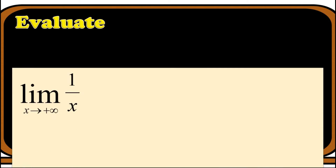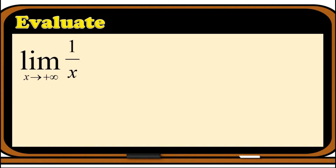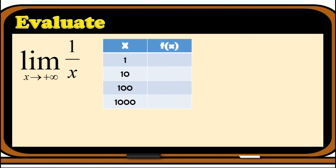Let us consider this example: evaluate the limit of 1/x as x approaches positive infinity. Using the numerical method, since we are approaching positive infinity, let us list the values 1, 10, 100, and 1000. Substituting each into the function: when x=1, f(x)=1; when x=10, f(x)=0.1; when x=100, f(x)=0.01; when x=1000, f(x)=0.001.